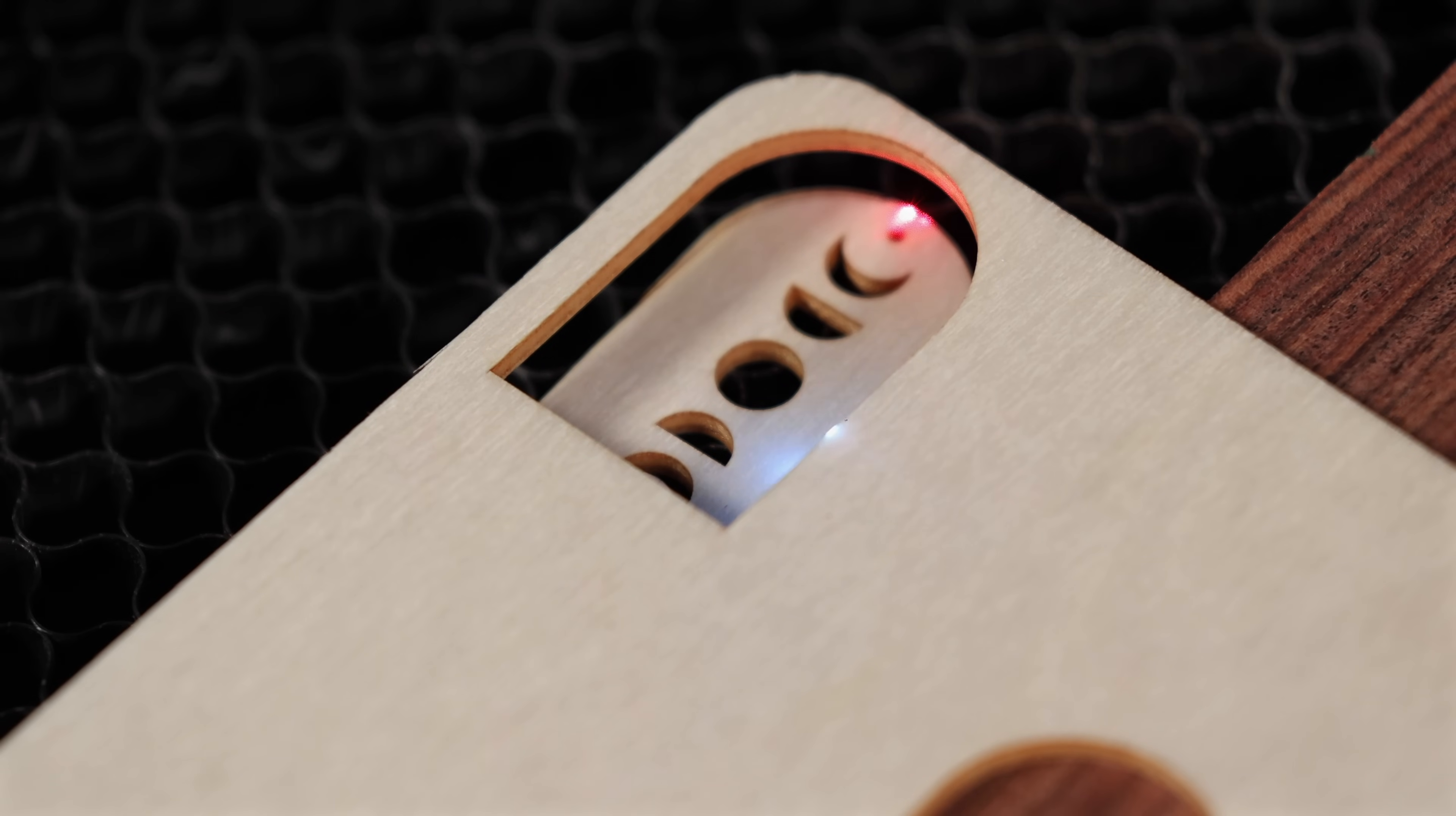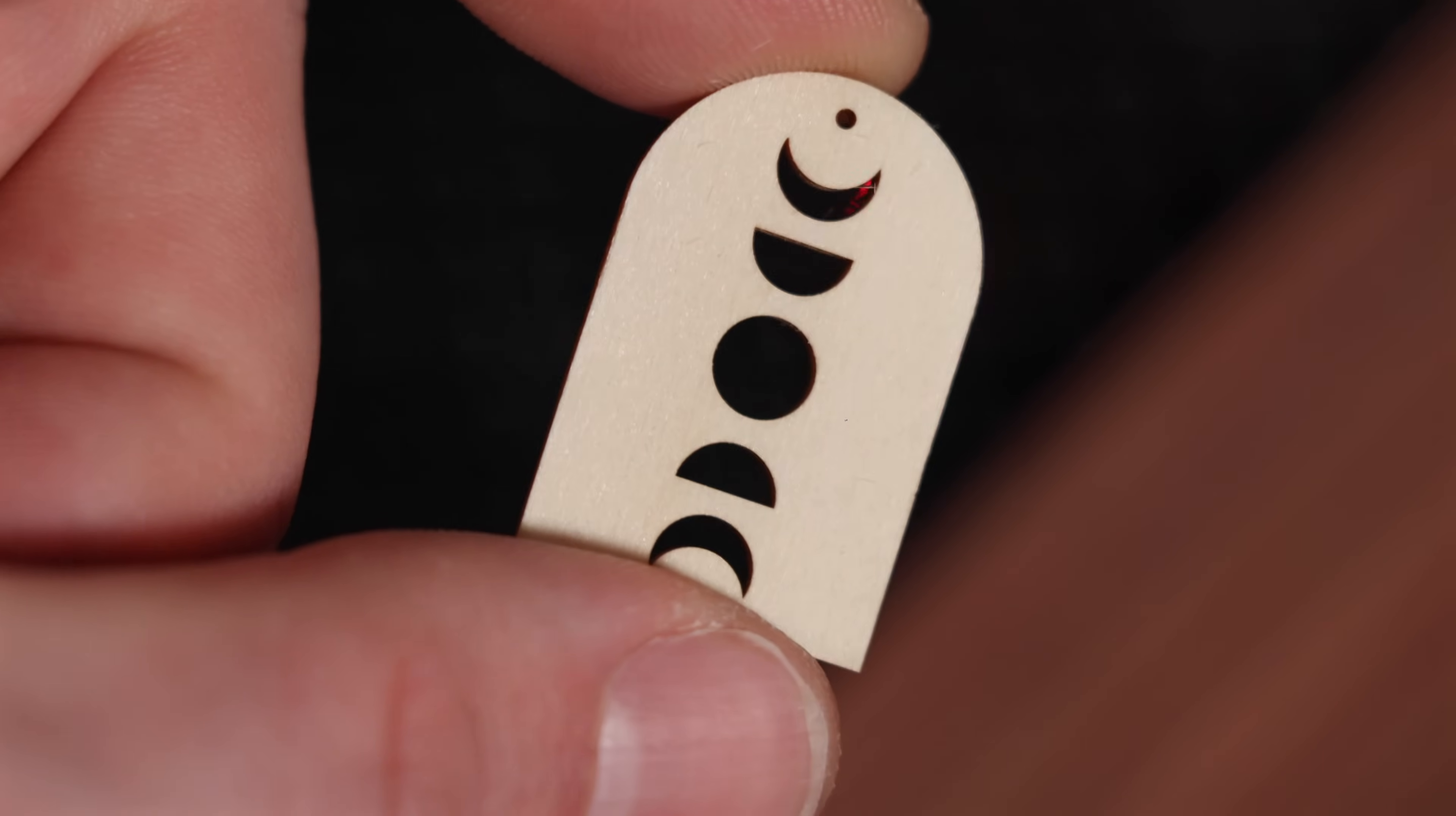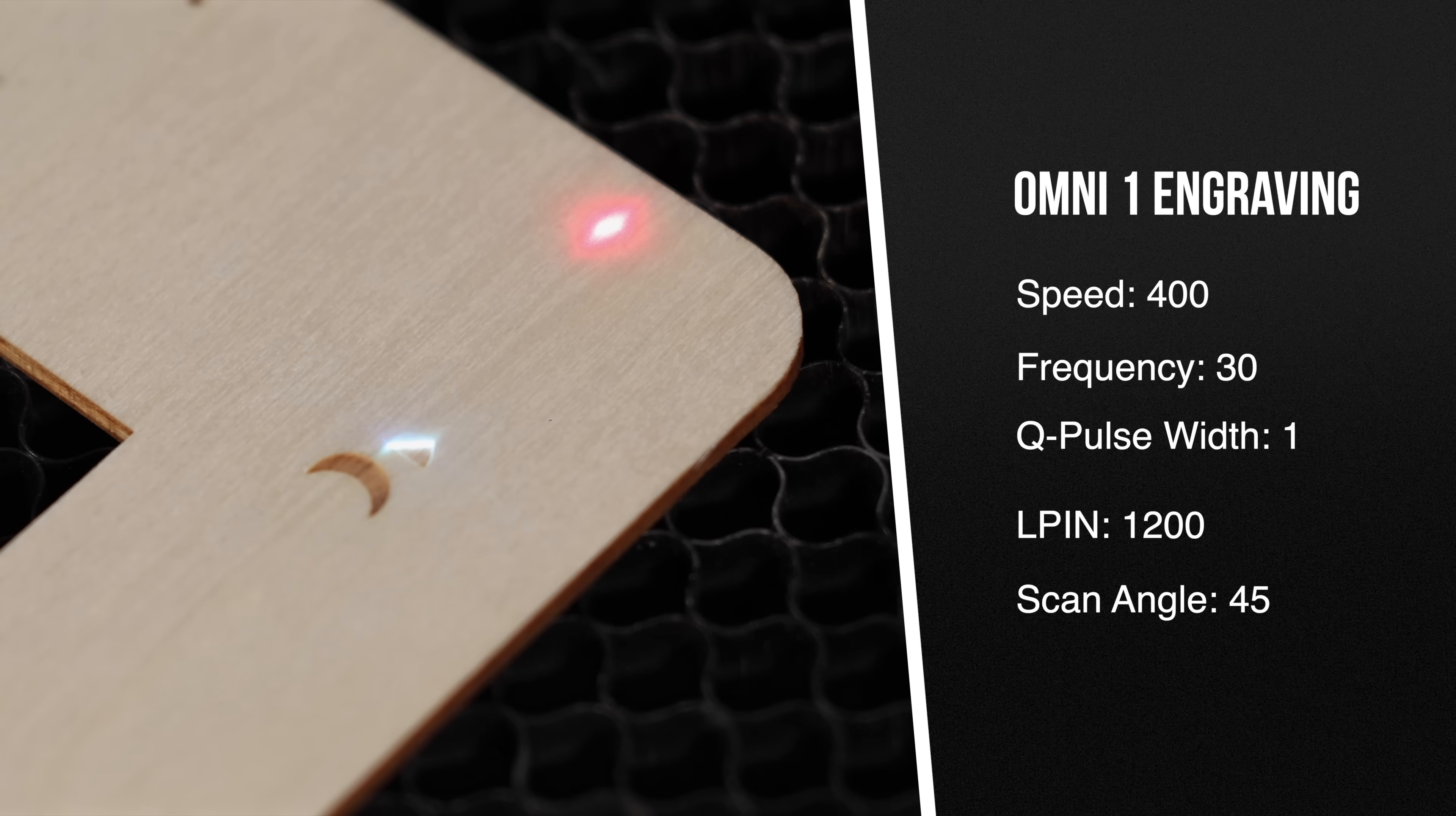Another major benefit of UV lasers is how little to no charring there is. This means post-processing is a breeze, and you don't have to worry about cleaning up burnt edges or dark marks, which is something we love about using UV for wood projects.